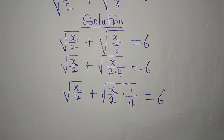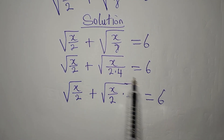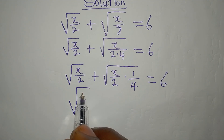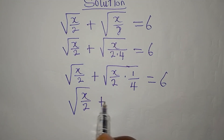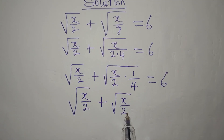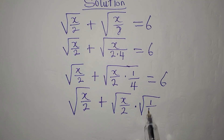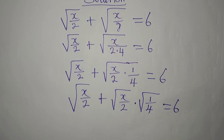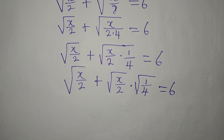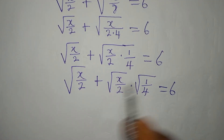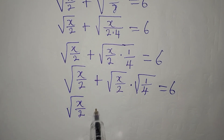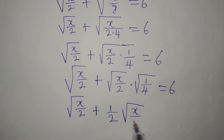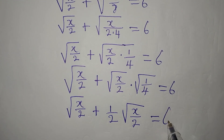Now you can split this again so that you're going to have the square root of x over 2 plus the square root of x over 2 multiplied by the square root of 1 over 4, and this is equal to 6. The square root of 1 over 4 is 1 over 2, so that will now multiply root x over 2, and everything is equal to 6.